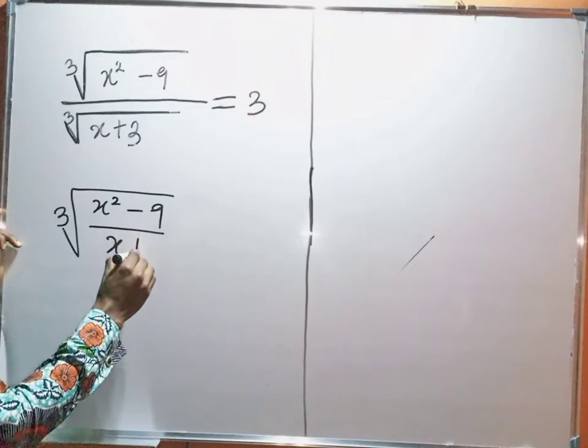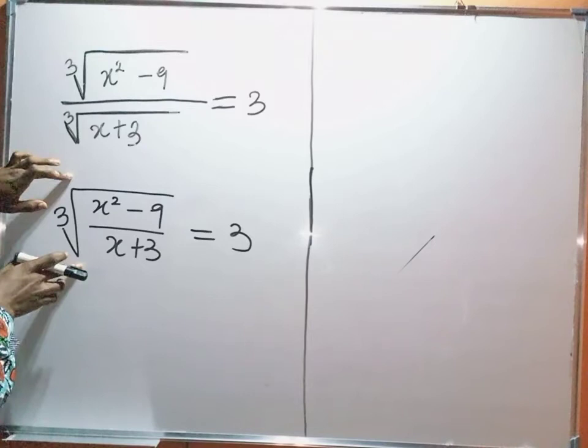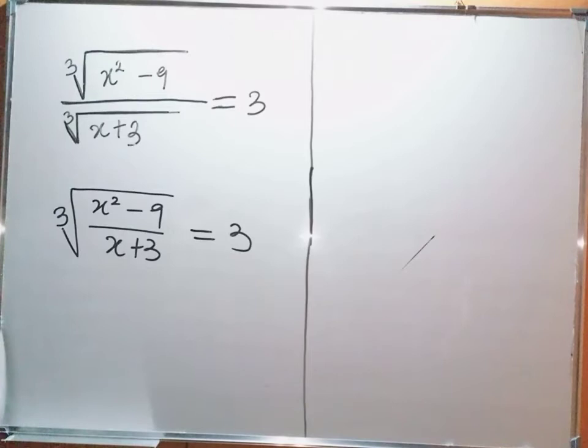So I can say that this is the cube root of x squared minus 9 divided by x plus 3, and this is equal to 3. So here we are one step further. I have the cube root of x squared minus 9 divided by x plus 3, equal to 3.